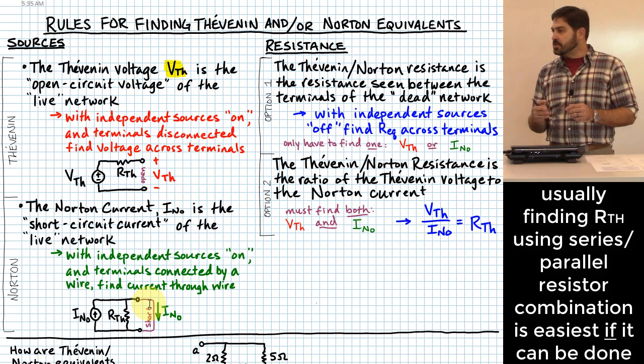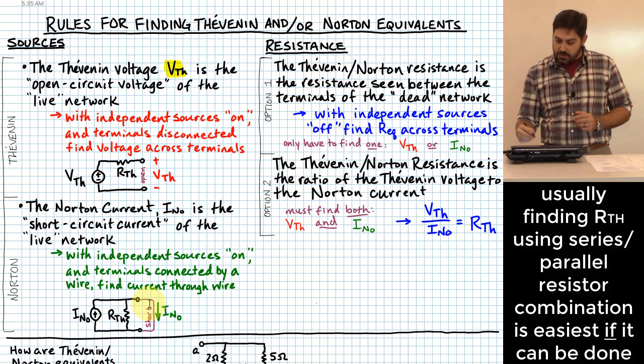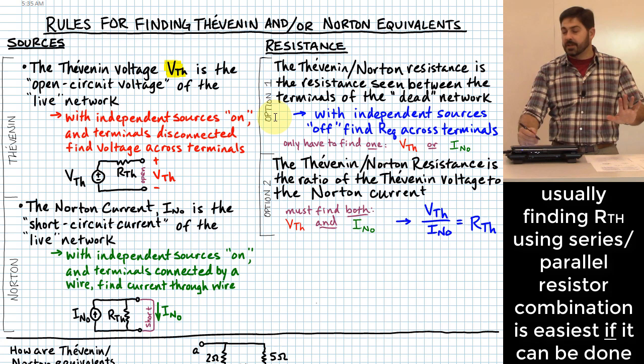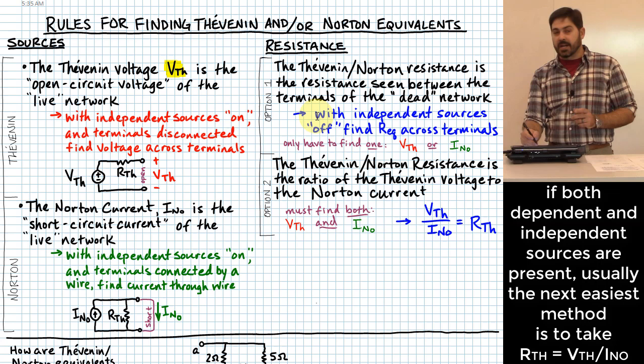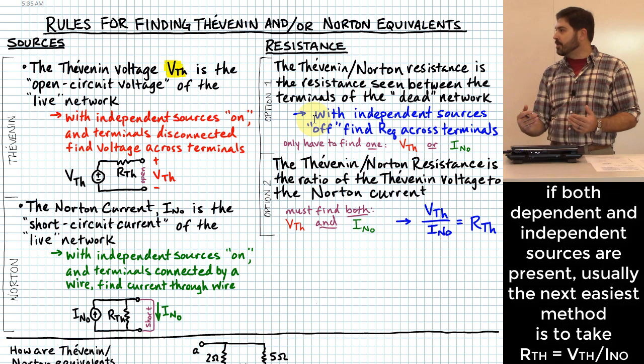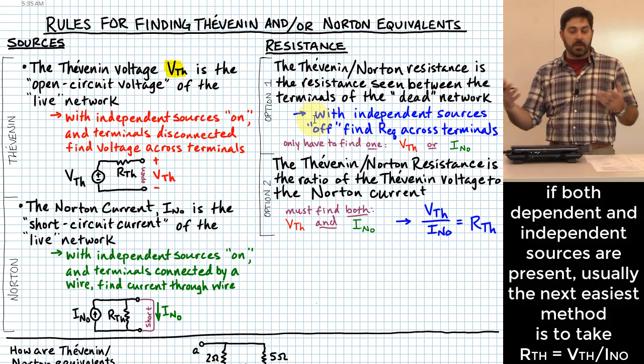You typically want to try to use option one if you look at the circuit network and, with all the sources killed, it's not hard to come up with an equivalent resistance using combinations of series and parallel resistors. If that's the case, option one is usually your easiest method. But when dependent sources are present, that makes option one not work, so option two — finding both Thevenin voltage and Norton current — is a bit more difficult but still works.